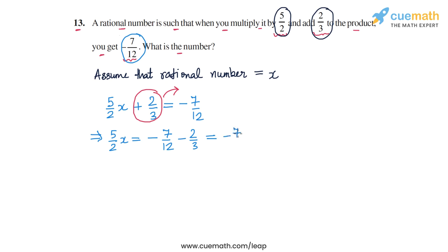So we have -7/12 and -2/3 can be written as -8/12. So -7/12 - 8/12 is -15/12 and in the lowest form -15/12 can be written as -5/4. So we can write this as -5/4.